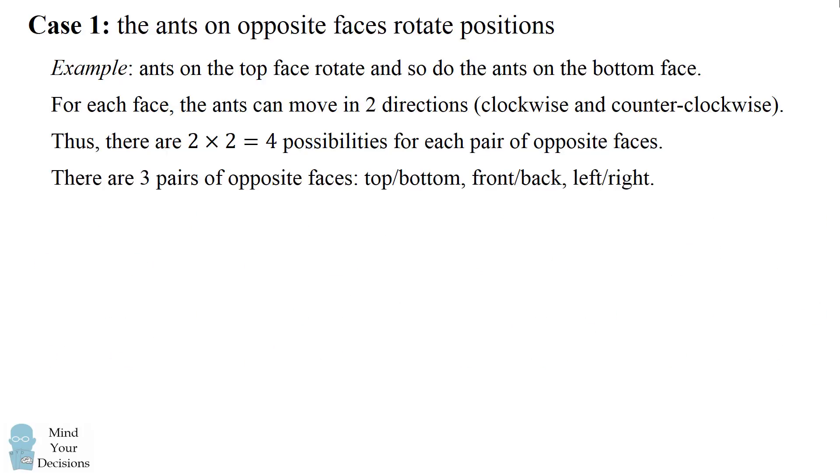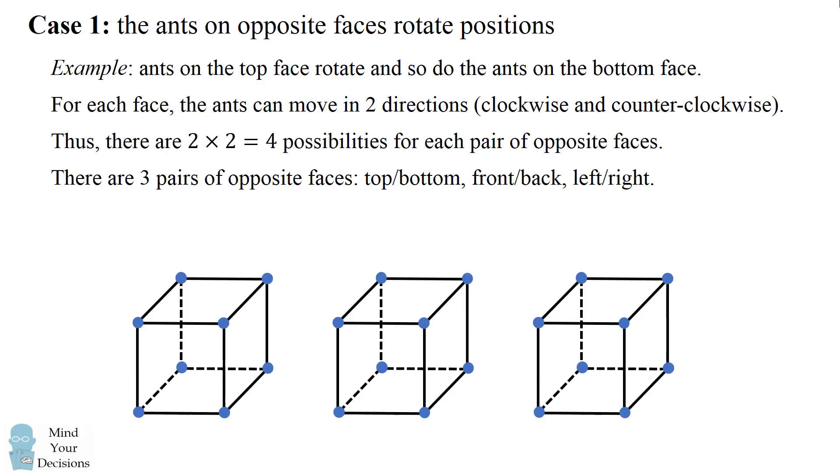Furthermore, we've only considered top and bottom faces, but there can be three pairs of opposite faces on a cube. We've just illustrated top and bottom, but we could also do the same sort of thing for the front and back faces, and we could do the same sort of thing for the left and right faces where the ants in these faces rotate positions with each other.